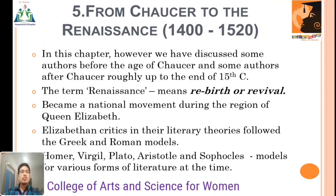The last topic in Unit 1 was from Chaucer to Renaissance. The age from Chaucer to Renaissance is from 1400 to 1520. In this chapter, we have discussed some authors before the age of Chaucer and some authors after Chaucer, roughly up to the end of the 15th century. The term Renaissance means a rebirth or revival. It became a national movement during the reign of Queen Elizabeth. Elizabethan critics, as literary theorists, followed Greek and Roman models — Roman, Virgil, Plato, Aristotle, Sophocles — models of various forms of literature at the time. Thank you for watching the video.